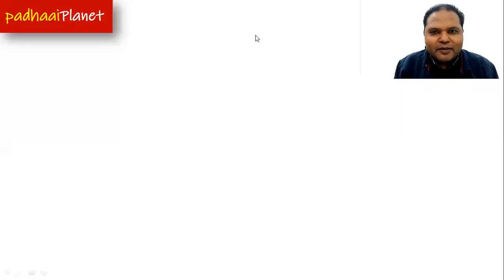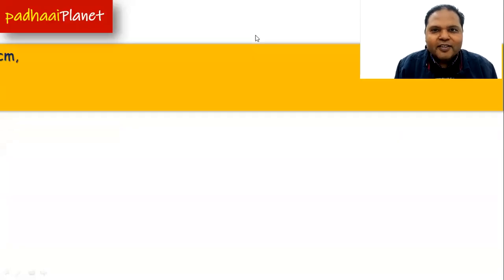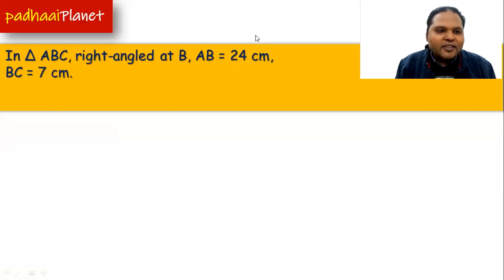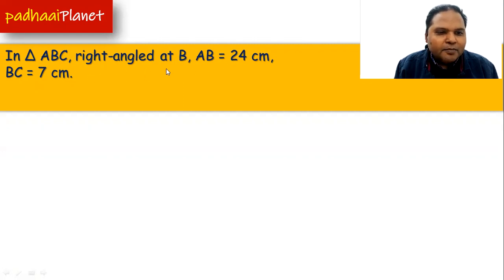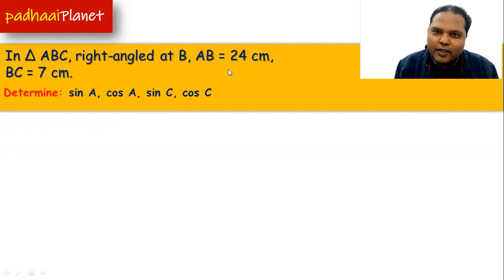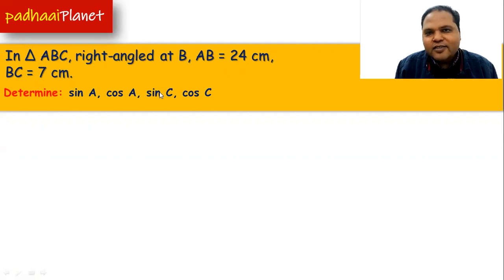Hi, welcome to PaliPlanet and we've got another question from Trigonometry. The question says that there is a triangle ABC which is a right angle triangle at point B, and it has got its sides AB and BC measuring 24 centimeters and 7 centimeters, and what we need to find out is the value of sin A, cos A, sin C and cos C.